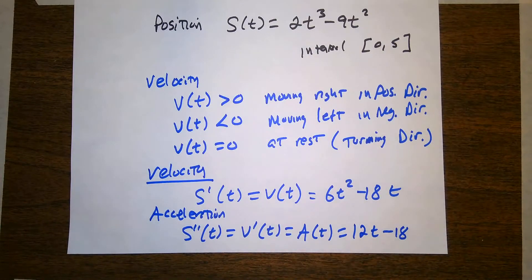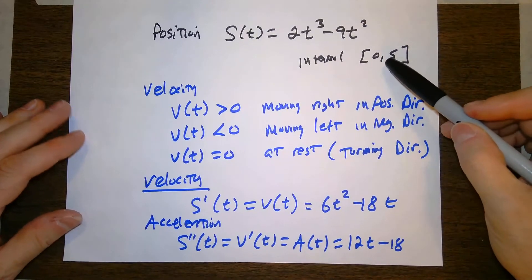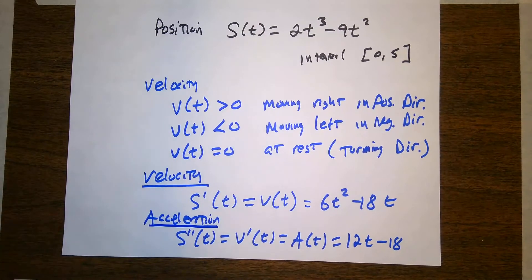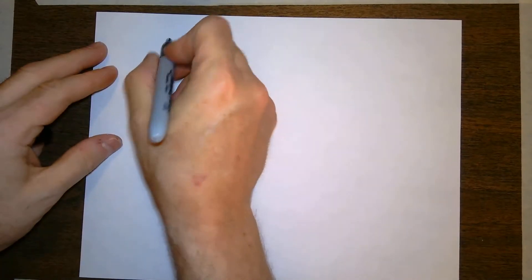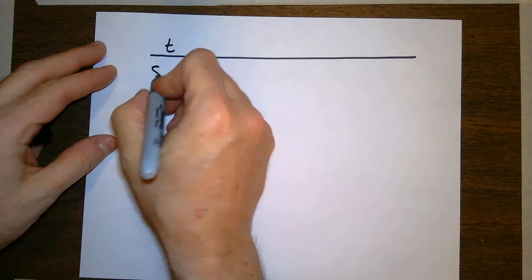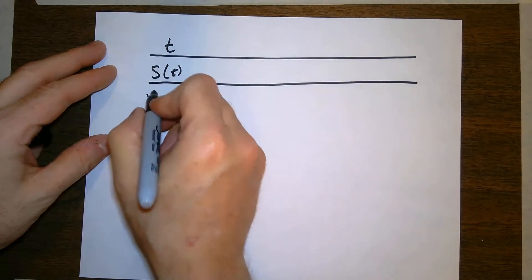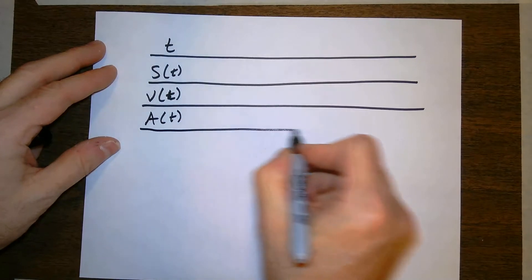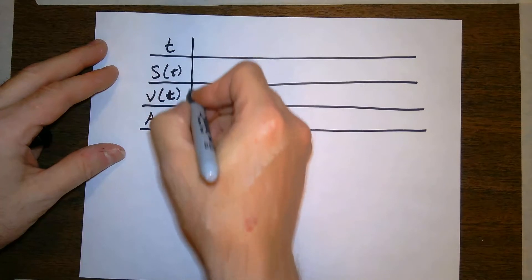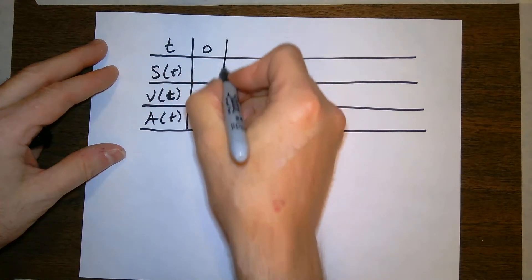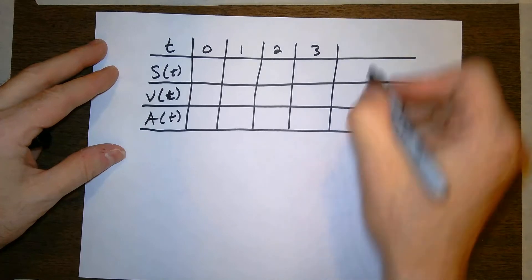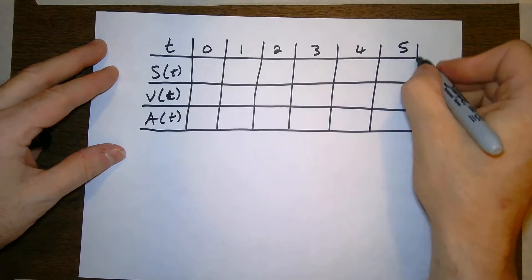So derivatives aren't very difficult here, and usually if we've got a nice well-behaved polynomial, it's not a big issue. I want to take a look and compare what's happening to this particle over this time interval — what is its position, what is its velocity, and what is its acceleration? In order to do that, we're going to create a table. In my table, I'm going to look at different time intervals — where is it (position), how fast is it going (velocity), and its acceleration. We're going to talk about the ideas of speeding up and slowing down.